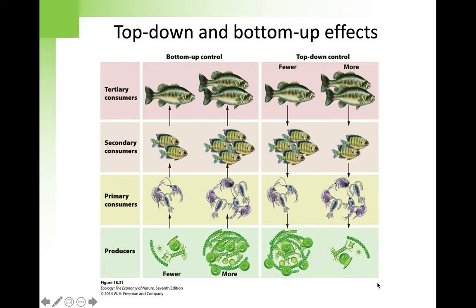Estes knew that at Amchitka, sea urchins were common but very small. He then arranged a dive at nearby Shemya Island, a location with no otters. The most dramatic moment of learning in his life happened in less than a second — sticking his head in the water at Shemya Island. It was just green with urchins and no kelp. It all fell into place: the loss of otters had completely reorganized the system, from one where kelps had probably been very abundant to one where sea urchins had eaten all the kelp. It was a striking demonstration of the Green World Hypothesis.